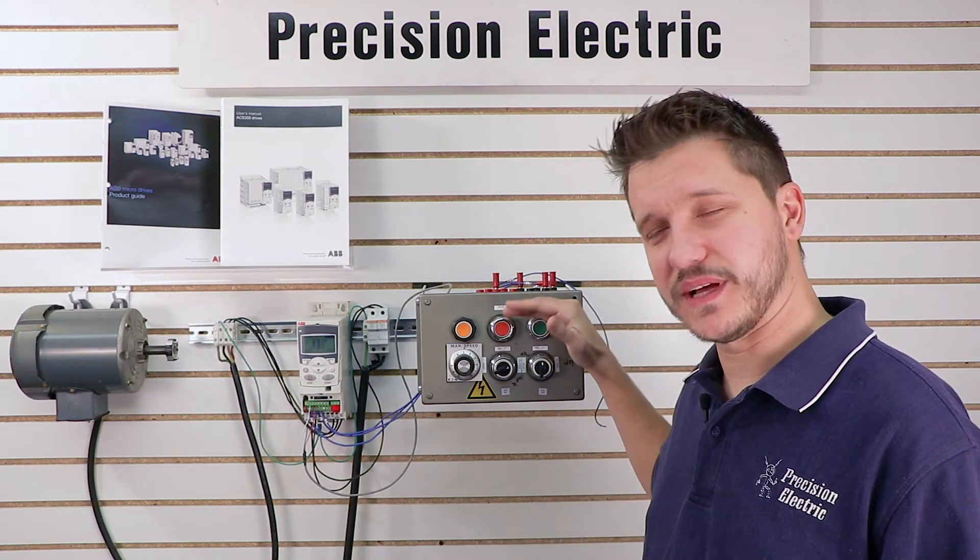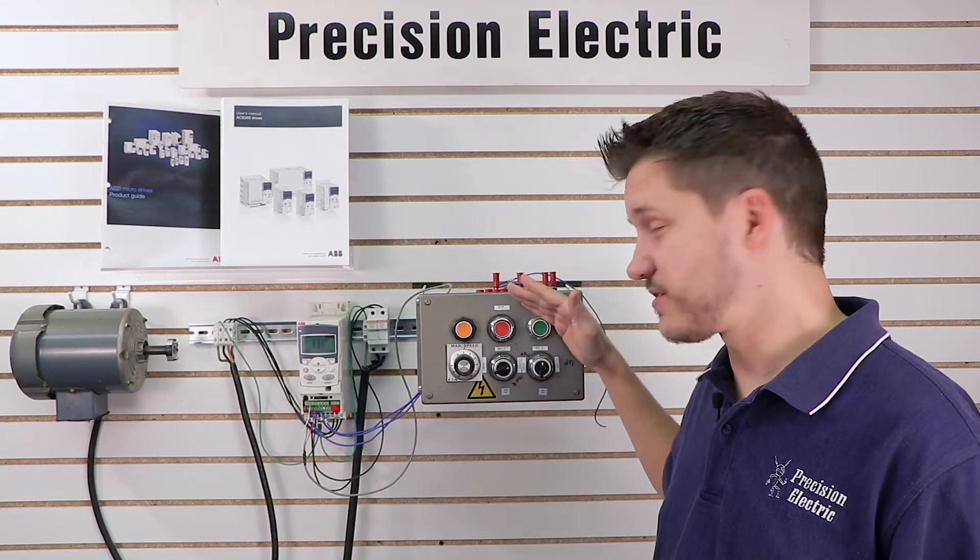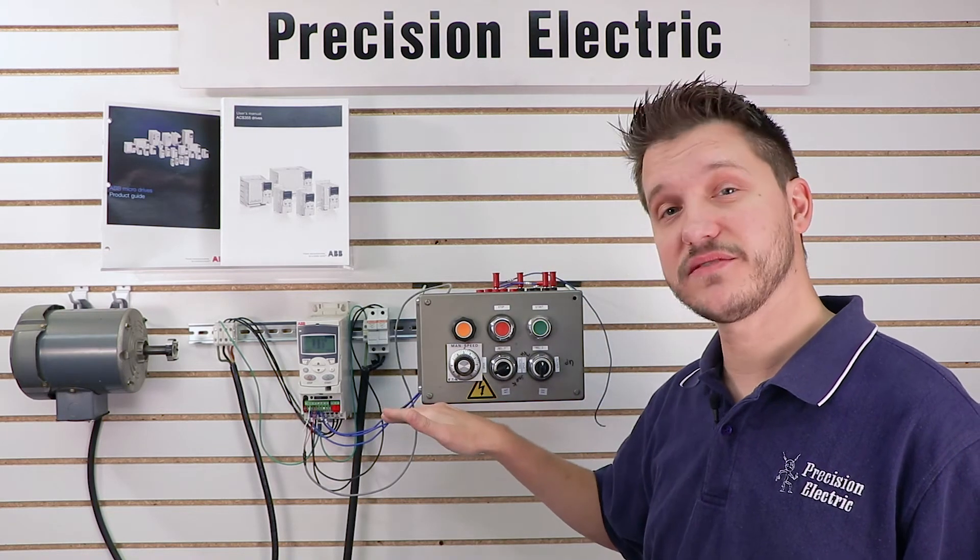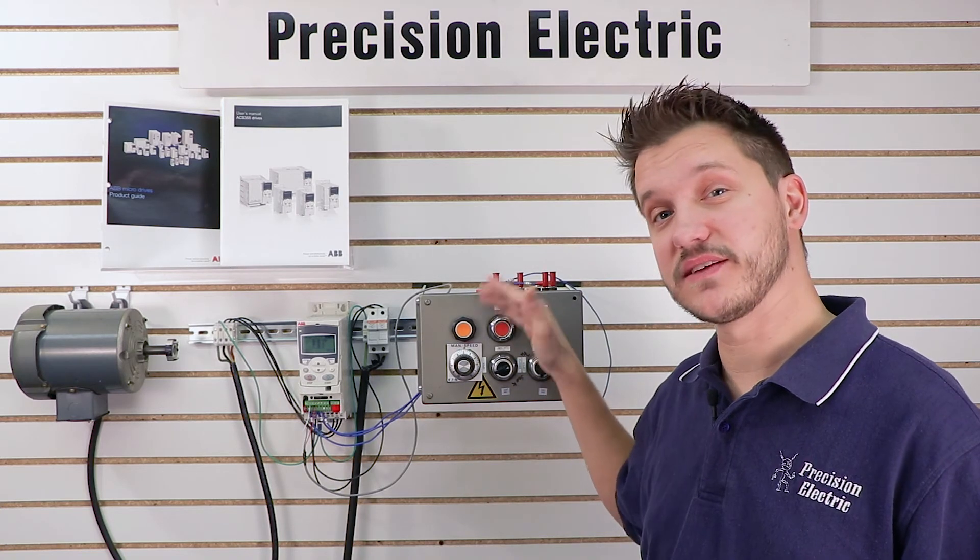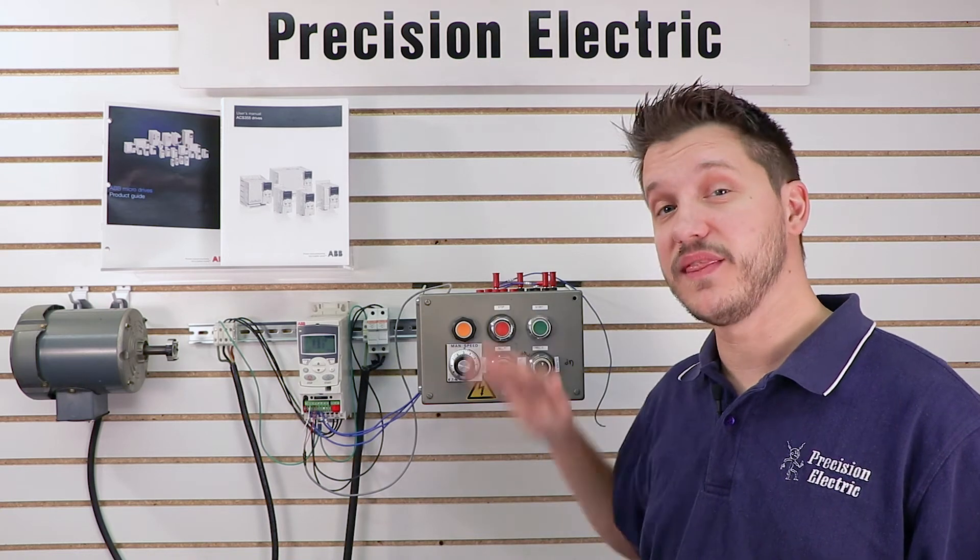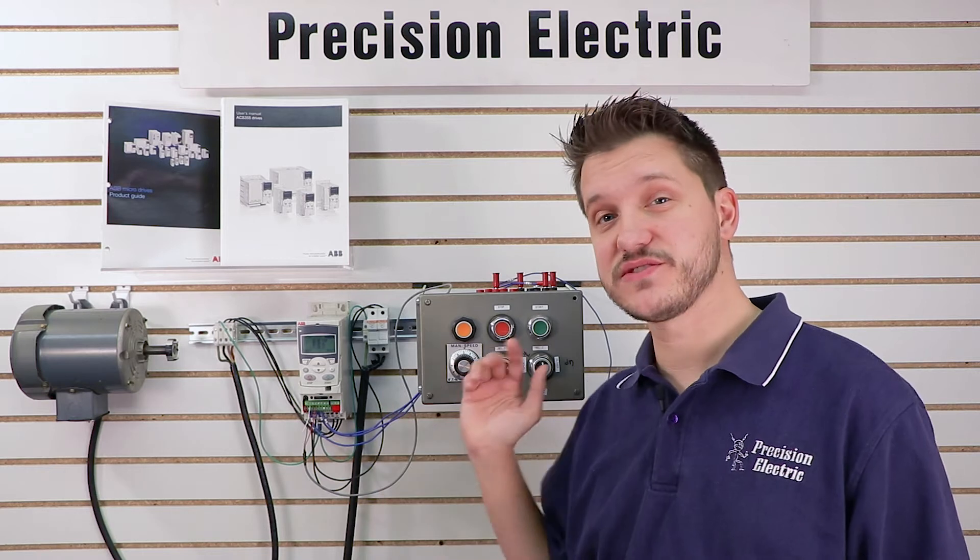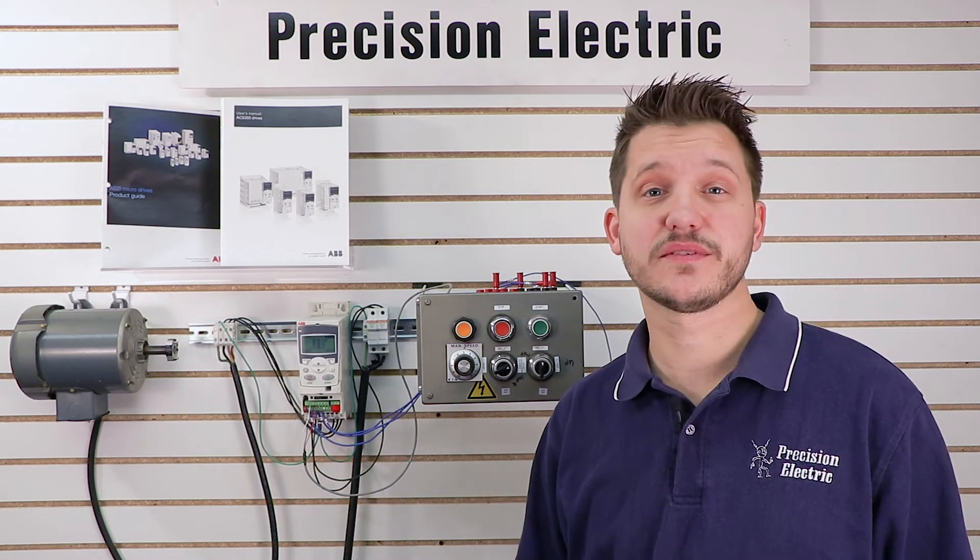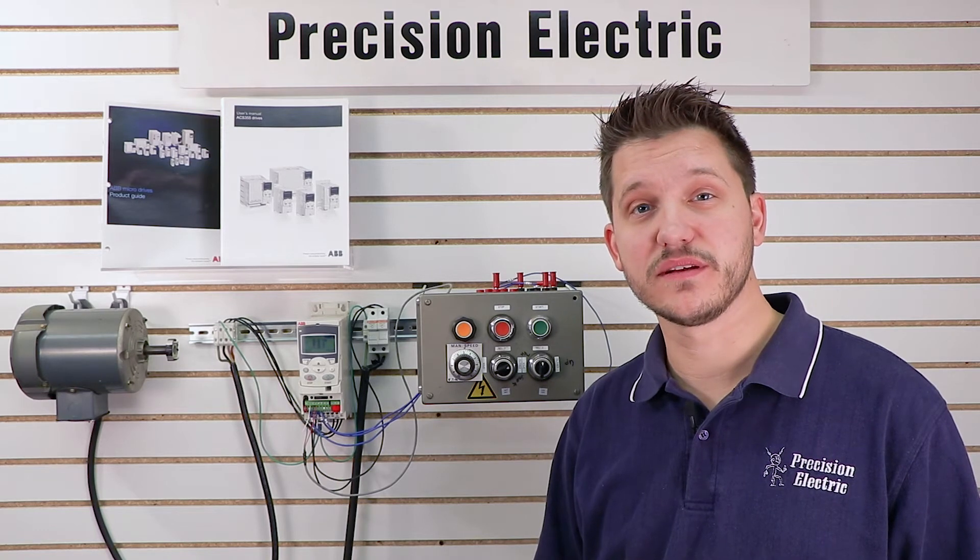We're going to have a plus voltage coming into the start button, and then the other side of the start button is going to come into the drive. Then we have a plus voltage coming into the stop button, and the other side of the stop button, which is normally closed, is going into a second input on the drive. Then we need to make a slight programming change, and after we make that programming change, the drive will be ready to accept those inputs. So let's go ahead and get it wired and programmed.